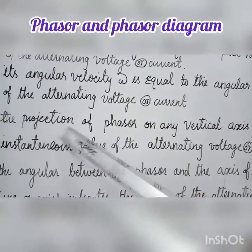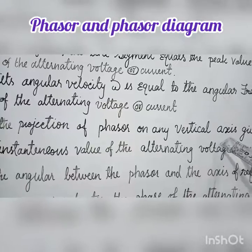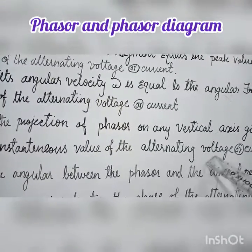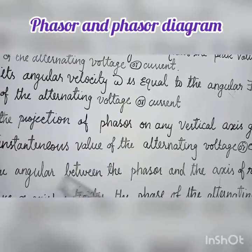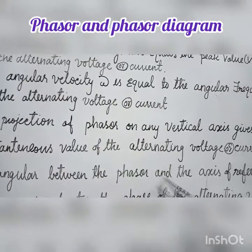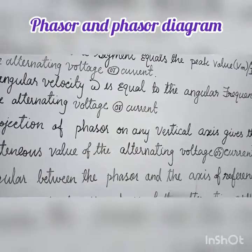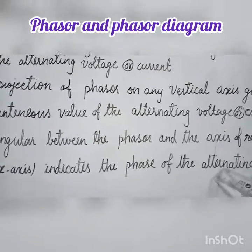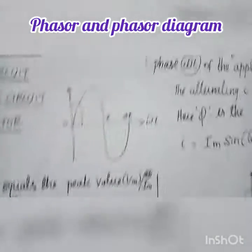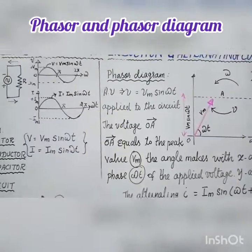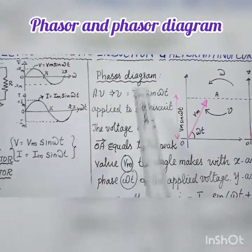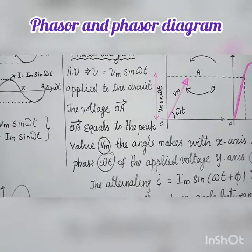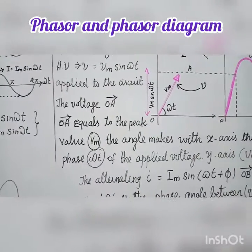The projection of the phasor onto the vertical axis gives the instantaneous value of the alternating voltage or current. The angle between the phasor and the positive x-axis (reference axis) indicates the phase of the alternating voltage or current. A phasor diagram is a diagram that shows the various phasors and their phase relations.